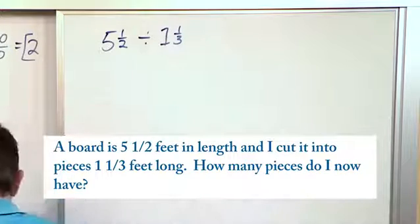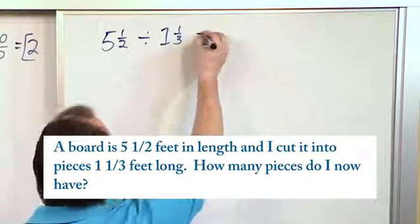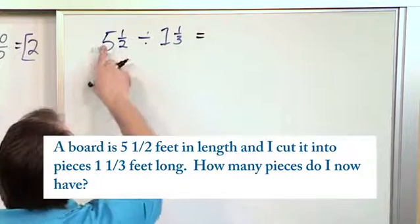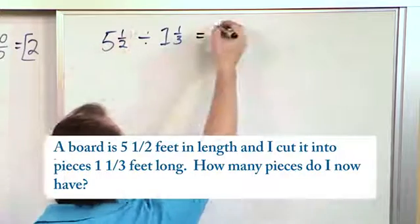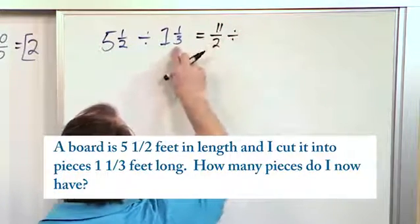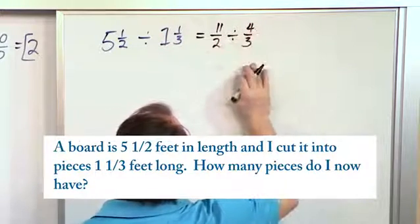In this case, we're not going to get a whole number. I'm just giving you a hint here. Two times five is ten, plus one is eleven, and we write it over two: 11/2. We keep the division symbol. This becomes three times one is three, plus one is four over three: 4/3.